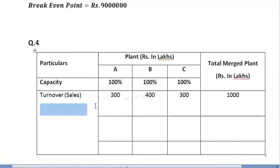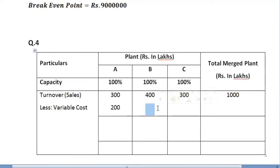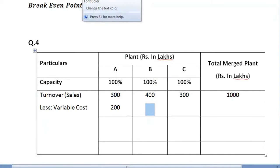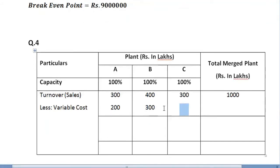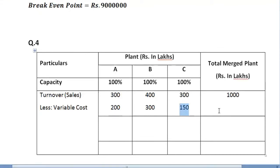Then, less variable cost. Variable cost for A at 100% capacity remains the same — 200. For B, at 70% it is 210, so at 100% the variable cost is 300. For C, at 50% it is 75, so at 100% it becomes 150. The total variable cost is 650 lakh.